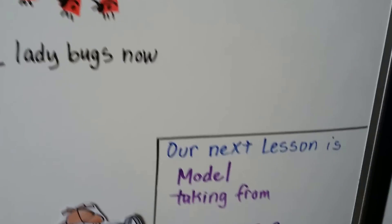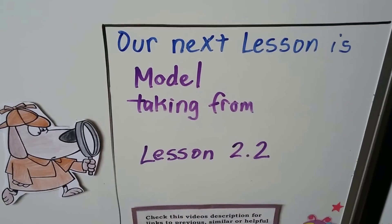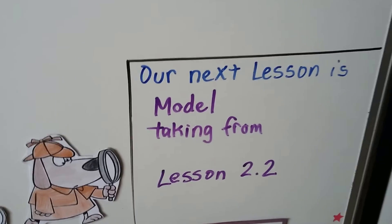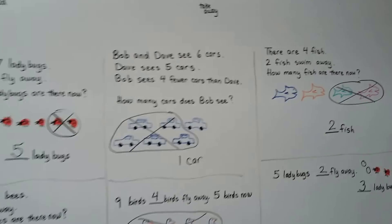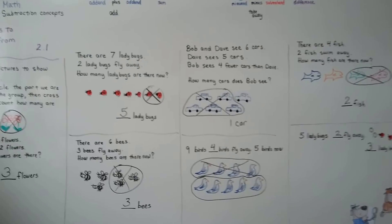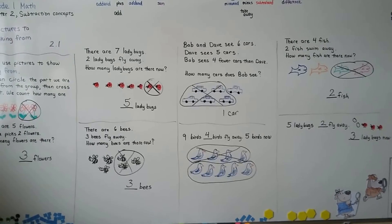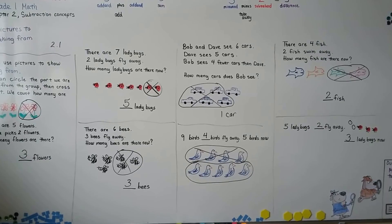Our next lesson is going to be model taking from — lesson 2.2. We're going to use counters and dots to help us model taking from for subtraction sentences. I hope I'll see you there. Bye!